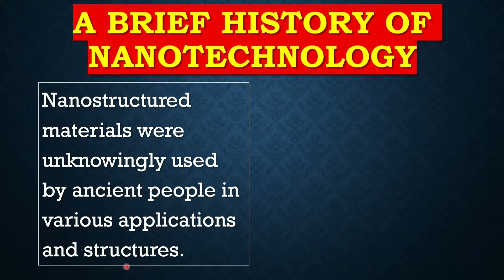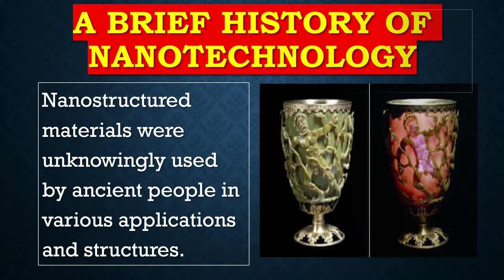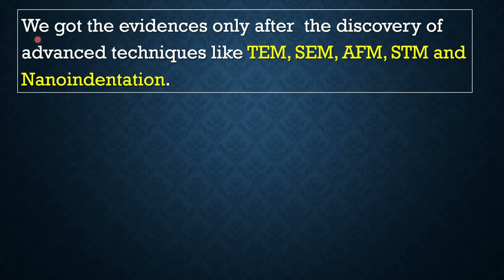Ancient people already used nanomaterials for their purposes but did not actually know they were using such advanced technology. You can see an example here — this is the Lycurgus Cup, in which nanomaterials were used. We got evidence that ancient people were using nanoparticles only after the discovery of advanced characterization techniques.